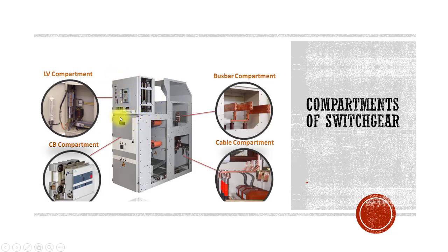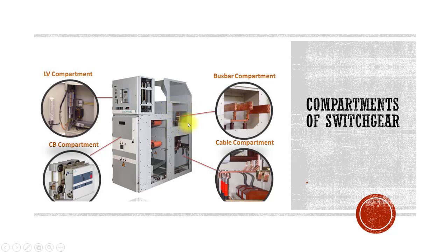Coming down, you will see this is the circuit breaker compartment. You can open the door and rack out the trolley. The trolley is inside this circuit breaker compartment, and you can also see the incoming organ contact of the circuit breaker. This is the trolley available inside the circuit breaker compartment.